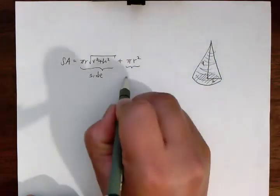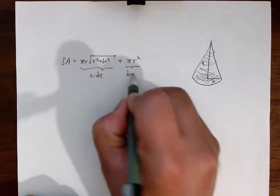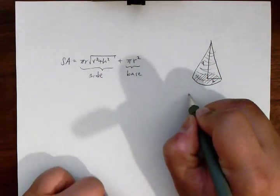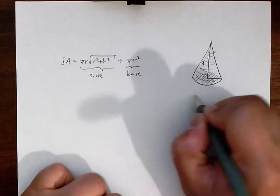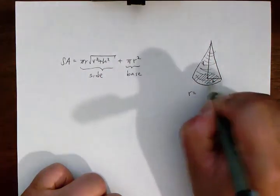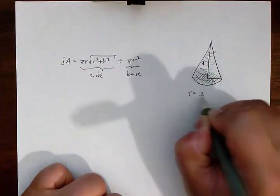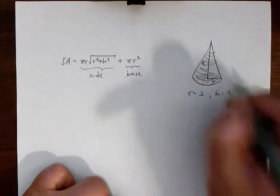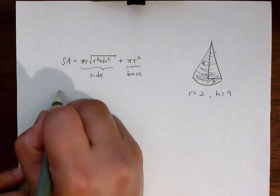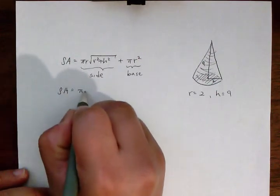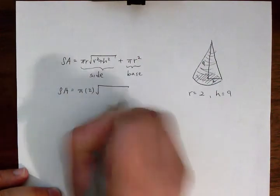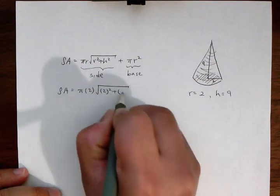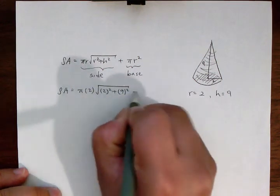In this case we're going to evaluate where r is equal to 2 for radius and h is equal to 9 for height. So the surface area is equal to pi times 2 square root of 2 squared plus 9 squared, plus pi times 2 squared.